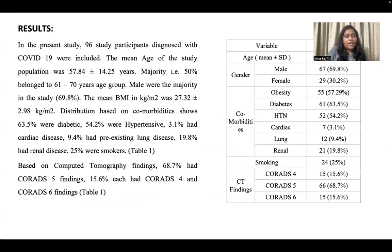In the present study, 96 participants diagnosed with COVID-19 were included. The mean age was 57 ± 14 years, with 50% belonging to the 61 to 70 years age group. Males were the majority. The mean BMI was 27 ± 2 kg/m². Distribution based on comorbidities showed that 63.5% were diabetic, 54% were hypertensive, 3% had cardiac disease, 9% had pre-existing lung disease, 19.8% had renal disease, and 25% were smokers.